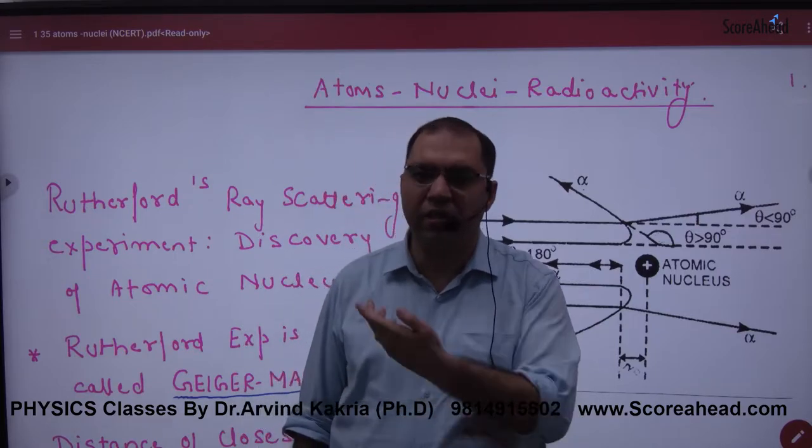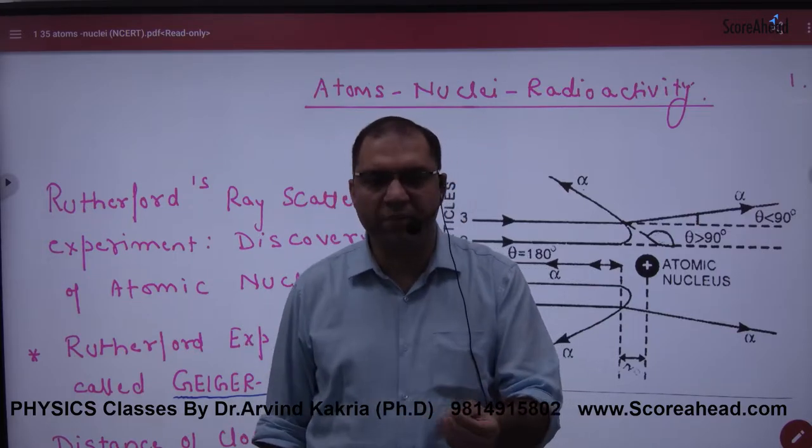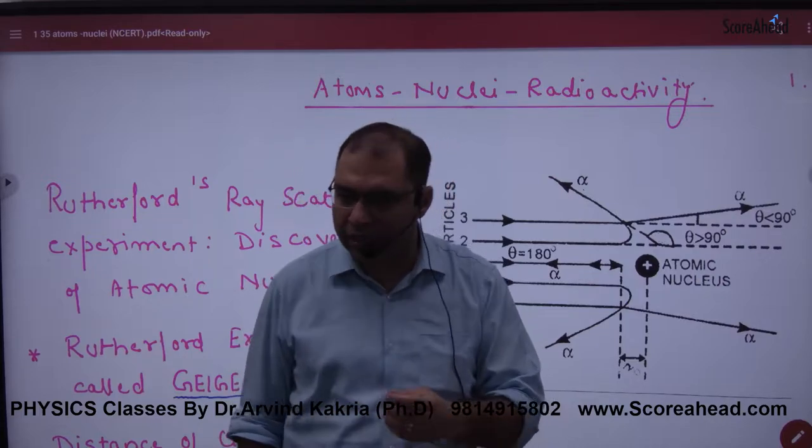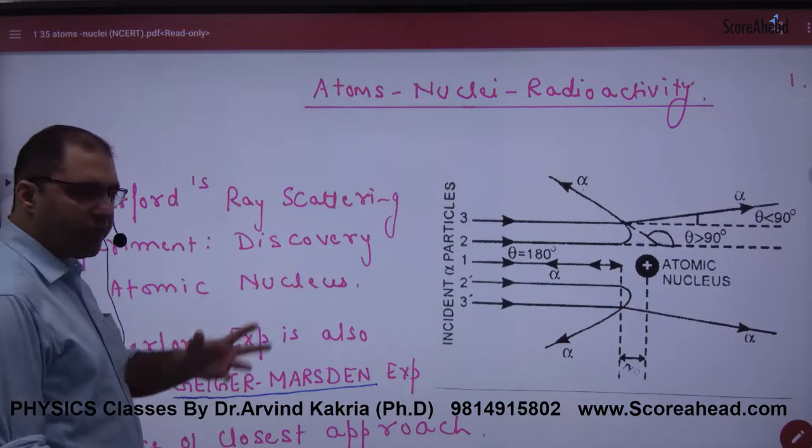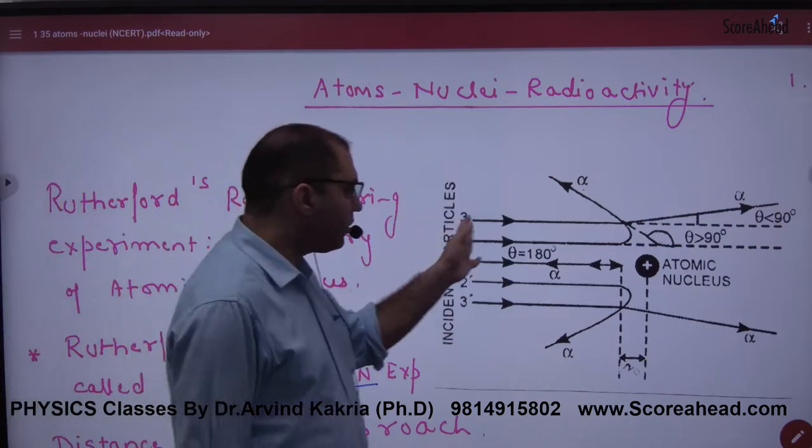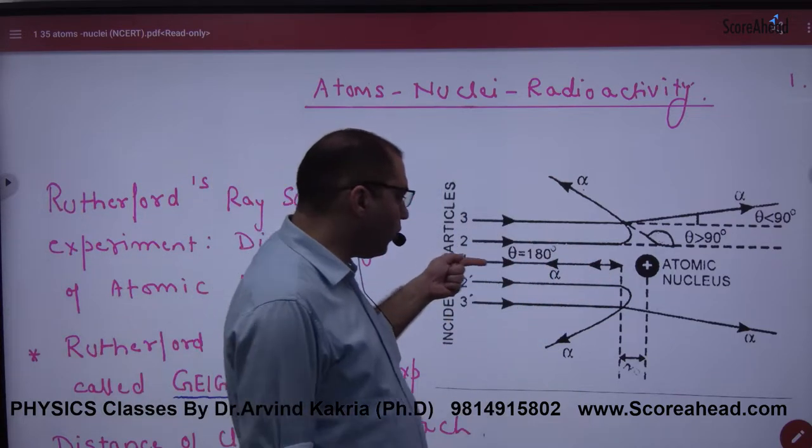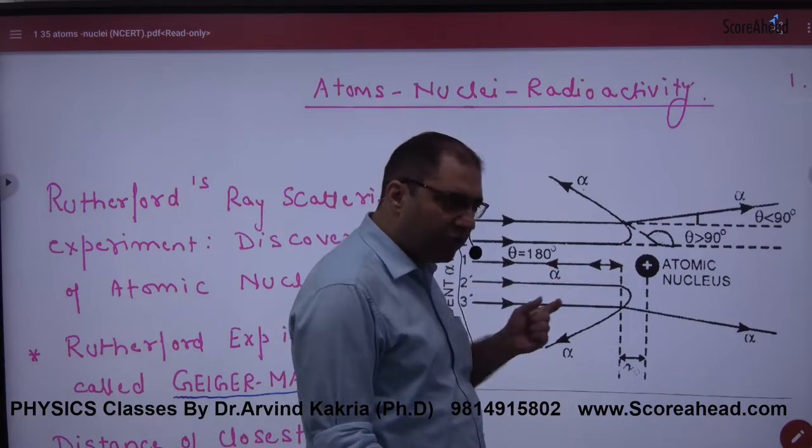And who did it right? Rutherford. Rutherford had bombardment from alpha particles on a nucleus. And what did he do? He took a gold nucleus. Alpha particles had bombardment. Some alpha particles head-on collide, 180 degrees, because there was some nucleus present.